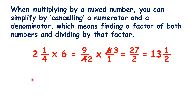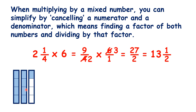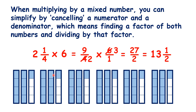Let's show how this works. There's two and a quarter, or nine quarters. And we're multiplying by six, so there's two and a quarter six times. Now we can regroup to fill up rectangles. You can see that we now have thirteen full rectangles, and then two quarters of another one.